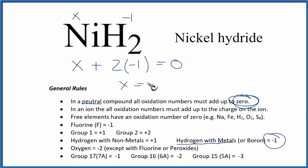So x minus two equals zero, x is going to equal two, actually a positive two. So that's the oxidation number on the nickel, plus two.